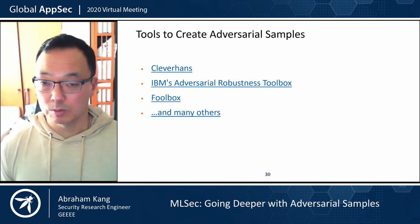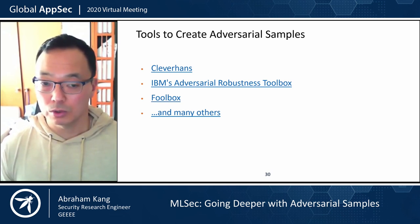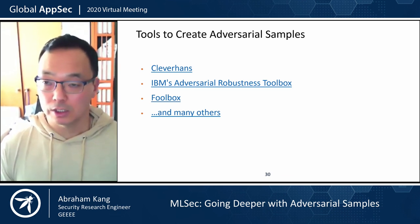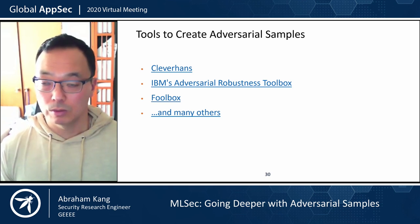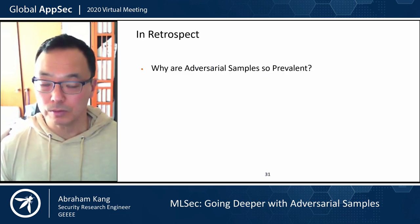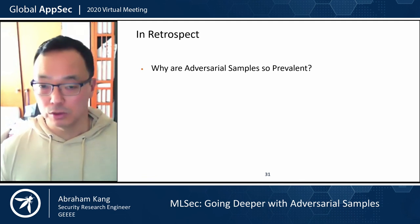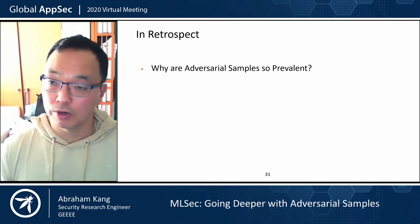To experiment, I suggest looking at Clever Hans, IBM's Adversarial Robustness Toolkit, FullBox, and many others — there's a link on the slide to a page listing additional tools you can use.